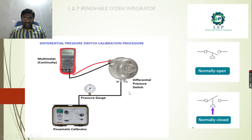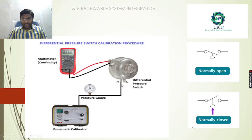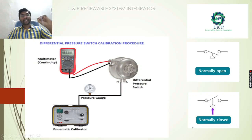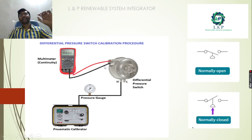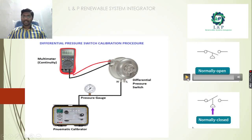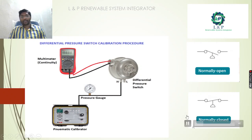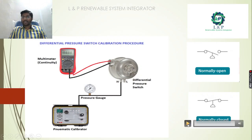For low pressure monitoring, normally the switch is in the NC position. When the low pressure condition occurs, it changes position from 1-2 to 1-3. The NC contact gets an open contact. When it achieves the set point, it changes from NO to NC. If the pressure switch is for low pressure measurement, it will normally be in NC, and when pressure occurs it changes to NO.